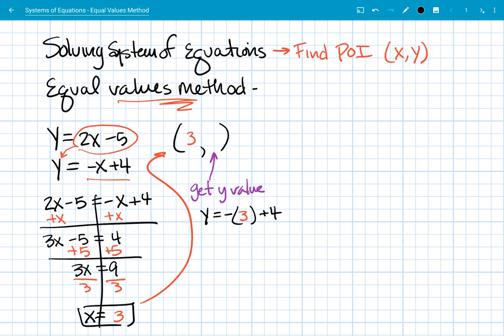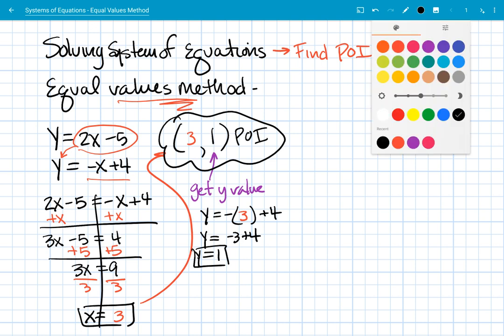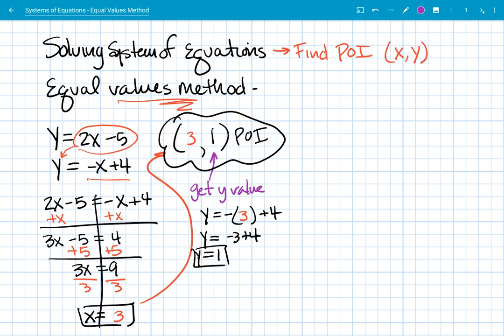And we said that we think the x is 3. So now if we simplify this, opposite of 3 is the same thing as negative 3. And that's telling me that the y value is 1. Alright, so now we think that the point of intersection is at (3, 1). But we're going to check just to be safe. So we're going to do a check.